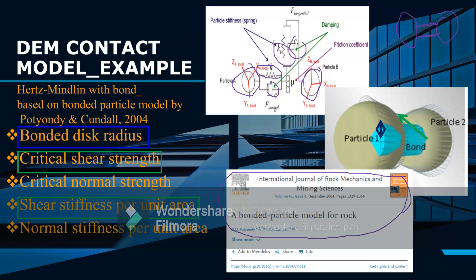We also have critical normal strength, which is the strength in the normal direction, and normal stiffness per unit area, which is the stiffness in the normal direction.